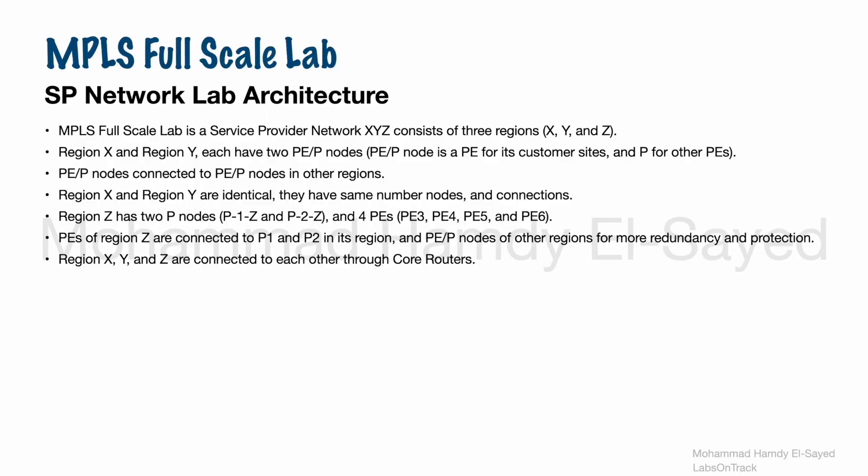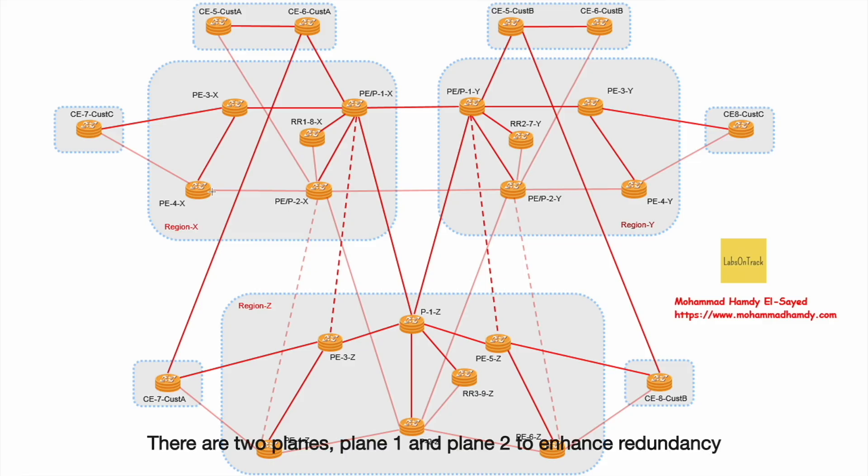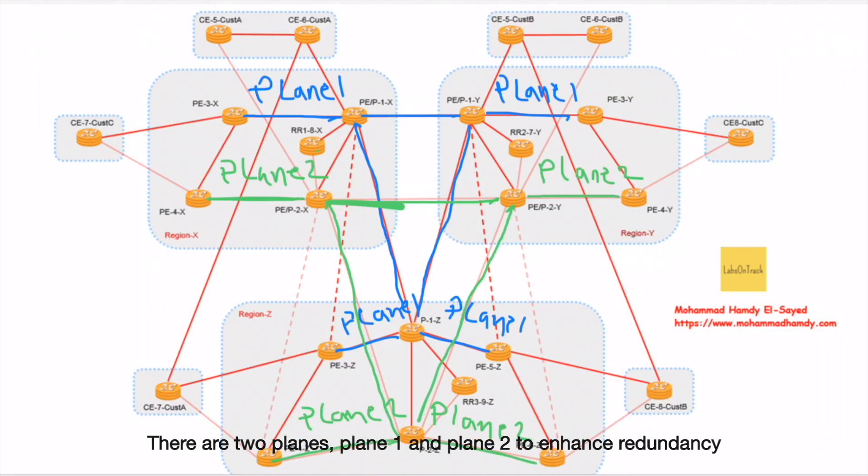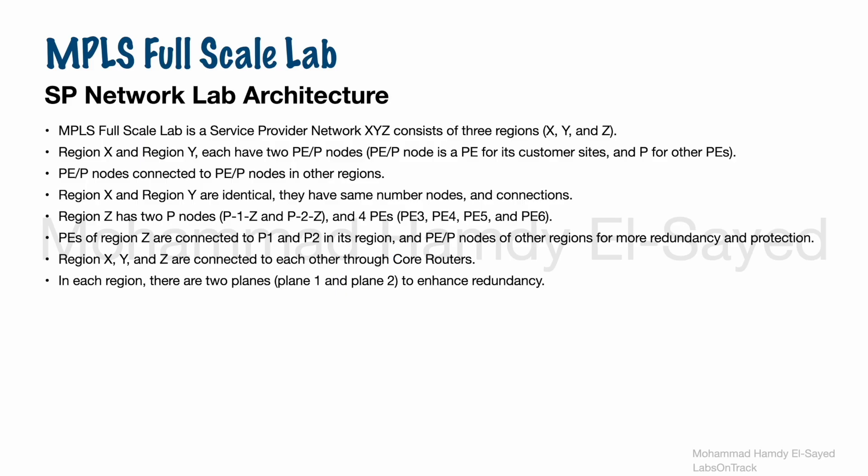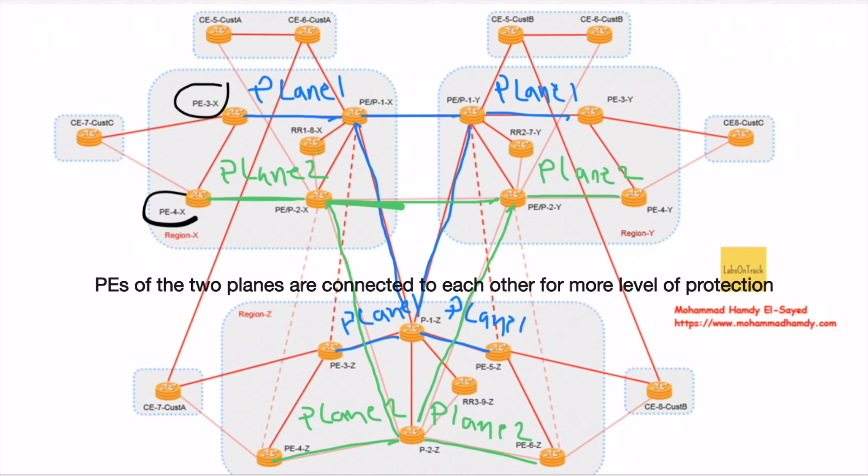To enhance node-level redundancy, there are two planes in each region: plane 1 and plane 2. Another level of protection is added for PEs in each region. They are connected to each other like PE3X is connected to PE4X, and same for PE3Z to PE4Z and PE3Y connected to PE4Y.